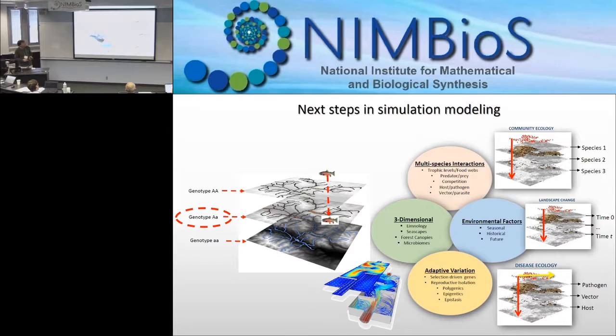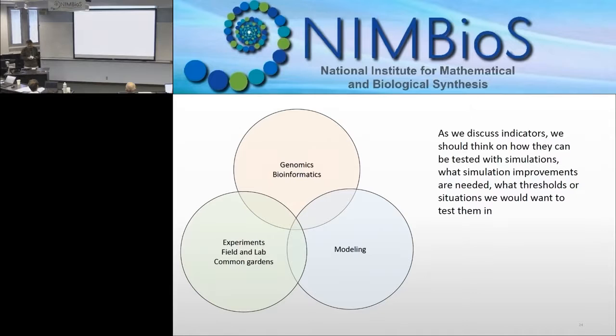In summary, what does this mean for us in this workshop? If we come up with novel indicators, novel statistics, novel approaches, let's think about how we're going to torture-test them — and one approach for that would be using simulation. It's easy to make simulation models; the danger is it's easy to make really complicated ones that you don't learn anything from. So let's make sure we understand that caveat as well.